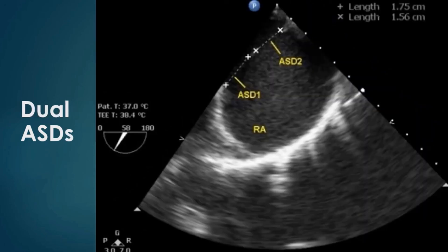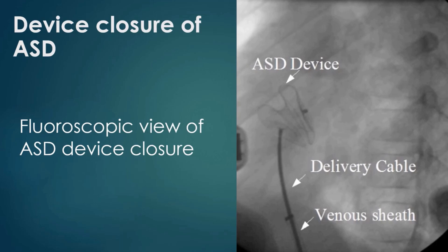This transesophageal echo image shows dual atrial septal defects with a small intervening segment of atrial septum. One defect measures 17.5 mm while the other measures 15.6 mm, giving a total of 33.1 mm. The rims at both ends also appear deficient, so device closure may not be feasible. Surgical closure will be ideal, provided there are no features of irreversible pulmonary hypertension. Device closure of ASD is suitable for secundum atrial septal defect with a good rim all around, and TEE is done to assess the superior, aortic, and mitral rims, as well as the total septal length.